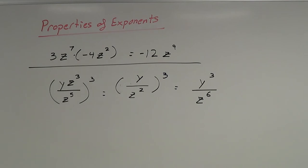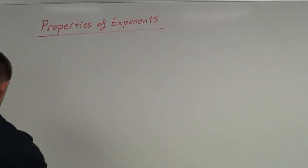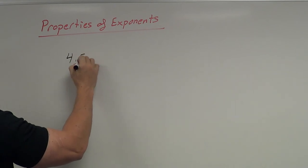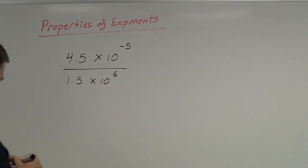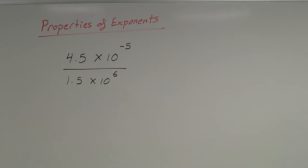The last example uses scientific notation: 4.5 times 10 to the negative 5th over 1.5 times 10 to the 6th. In mathematics, this is used in the real world — in astronomy with very large numbers like light years or the distance the moon is from the earth, and in chemistry with very small numbers like the size of an atom. I'm going to evaluate this using properties of exponents.